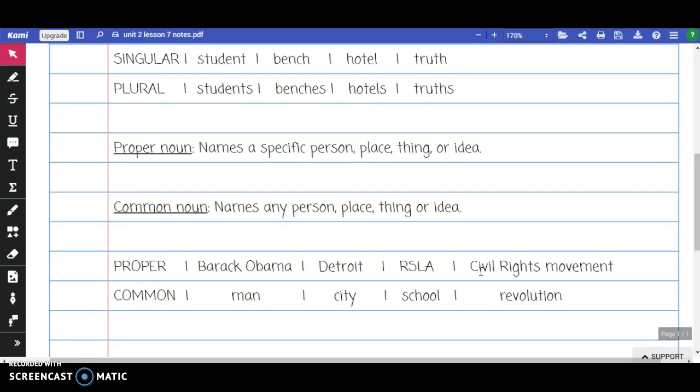For the proper noun Civil Rights Movement, we know that this refers to a movement that took place from the mid-1950s into the mid-1960s. And the common noun that could be used to describe this movement is a revolution.